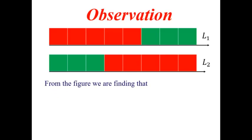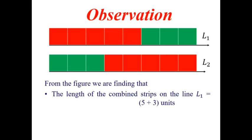So, from the figure, we are finding that the length of the combined strips on the line L1 is equal to 5 plus 3 units.